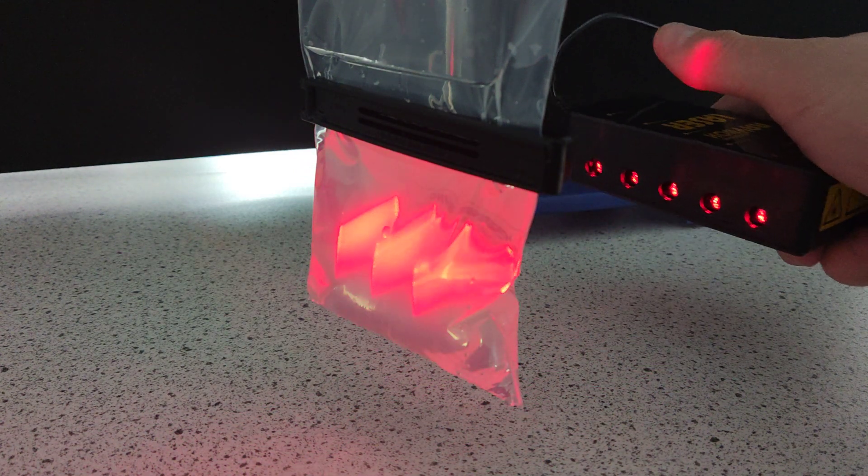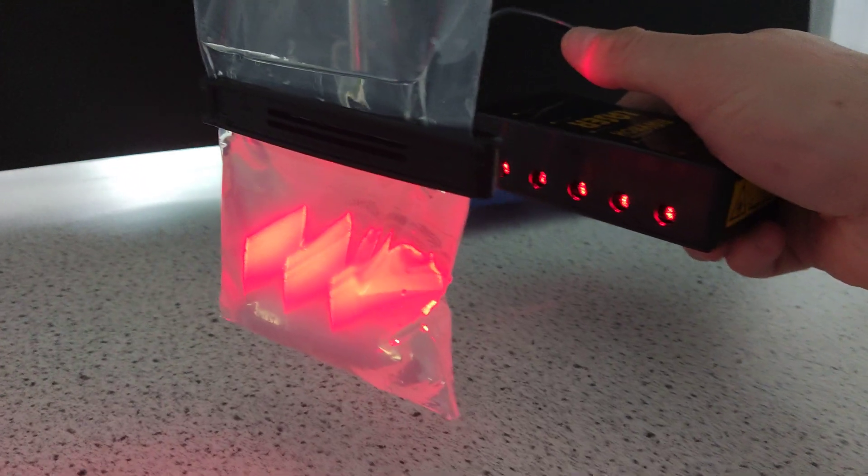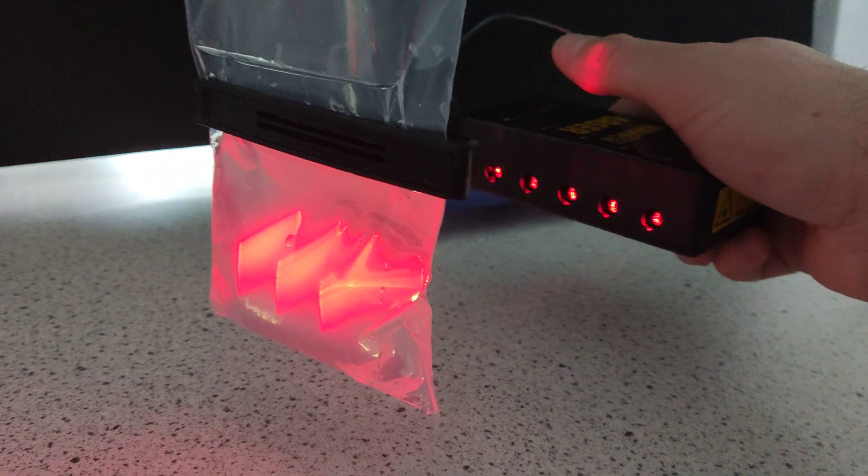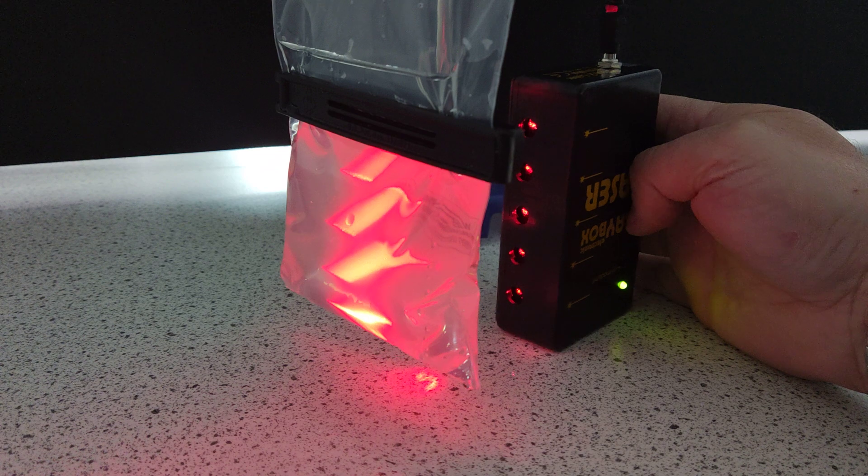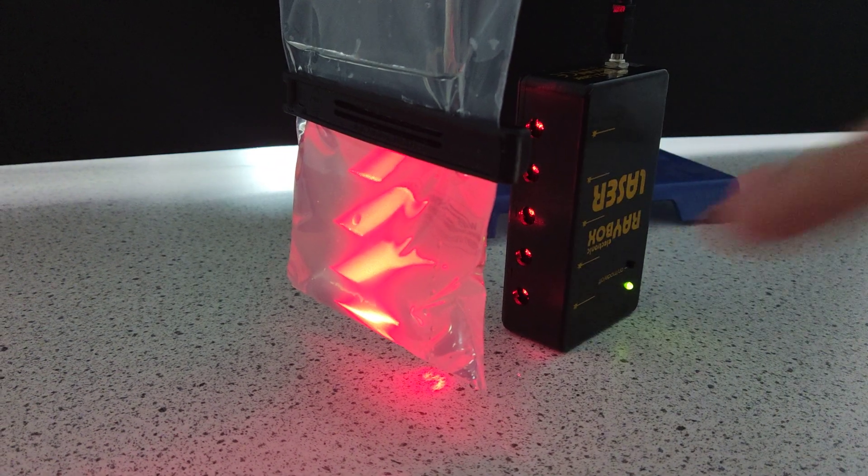So we can take the Raybox and I can put it through if I move around a little bit. Can you see how you've got flat lines? Now they should all be parallel. If I turn it this way you will see they're not parallel are they?